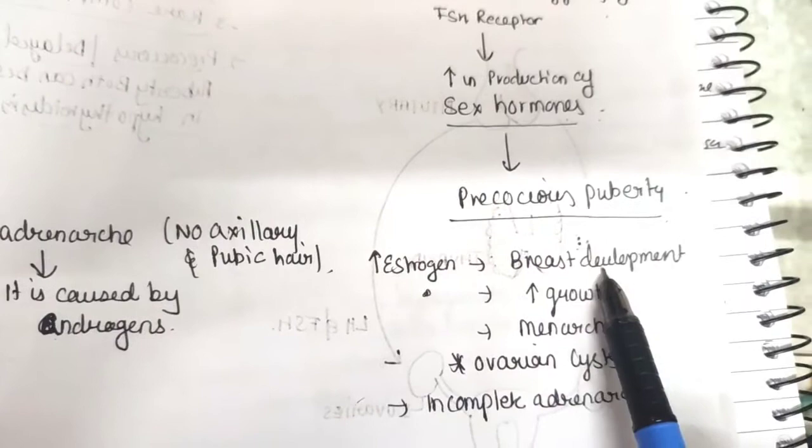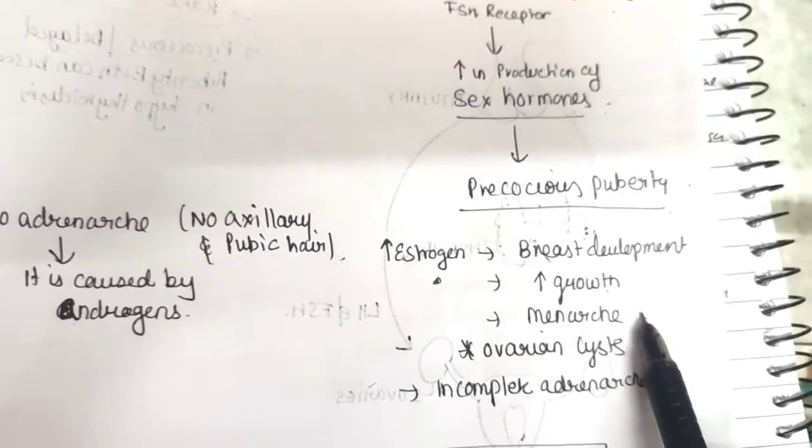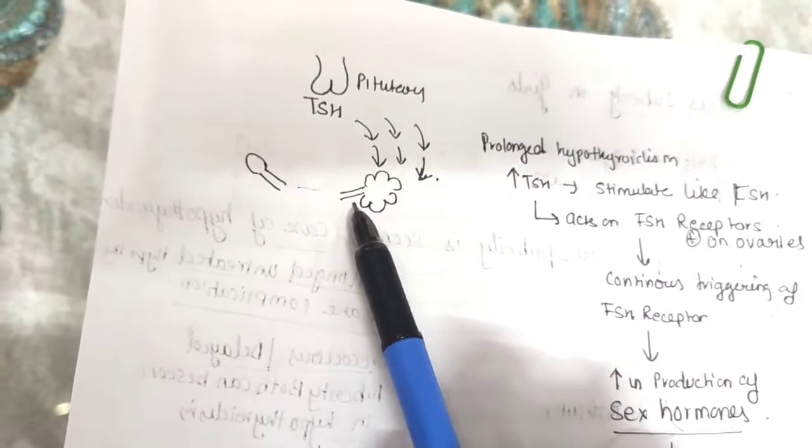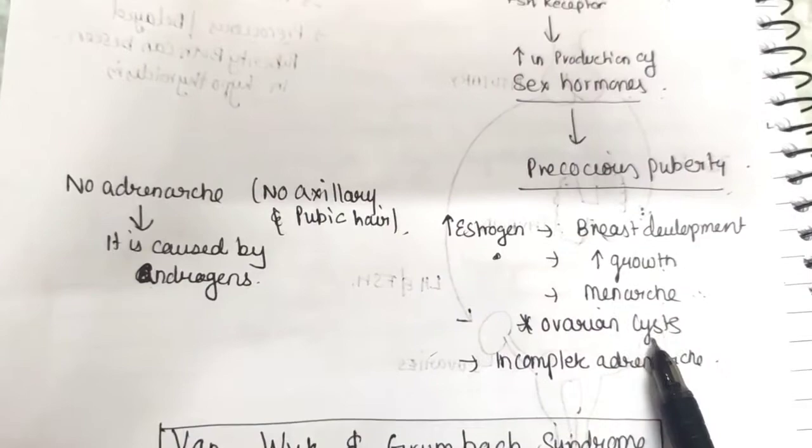We know sex hormones are estrogen and progesterone. With the effect of high estrogen, there will be breast development, increase in growth spurt, and menarche or uterine bleeding. And because there is continuous triggering and stimulation of the ovaries, there will be formation of ovarian cysts also.